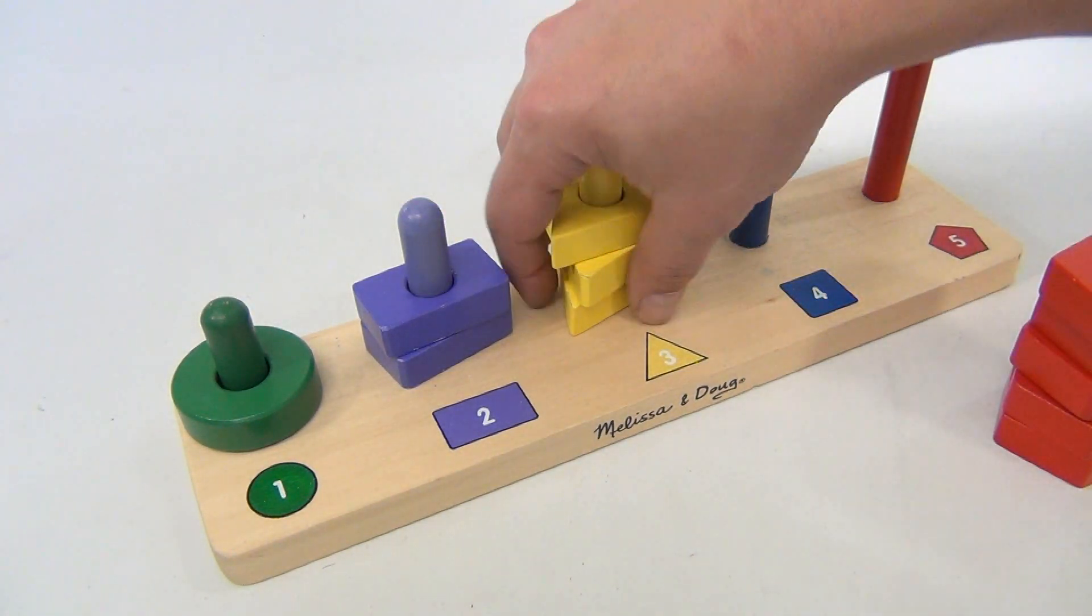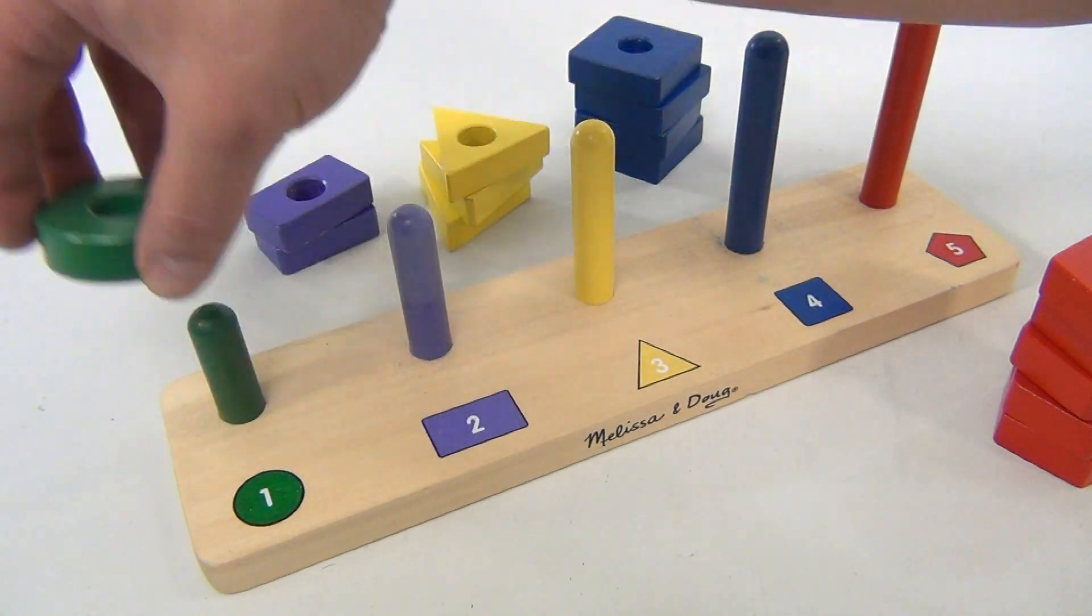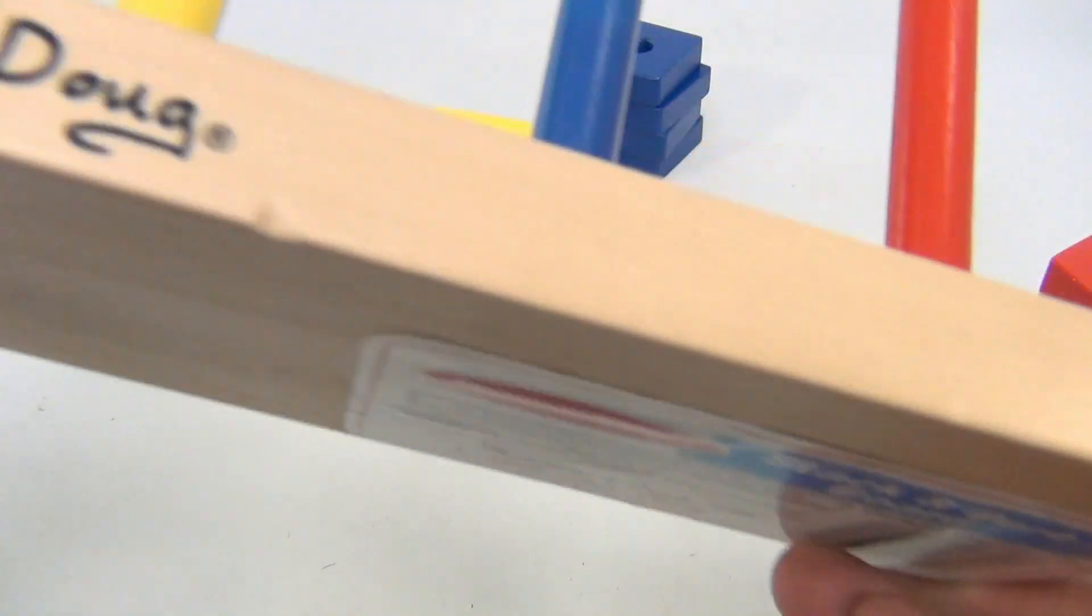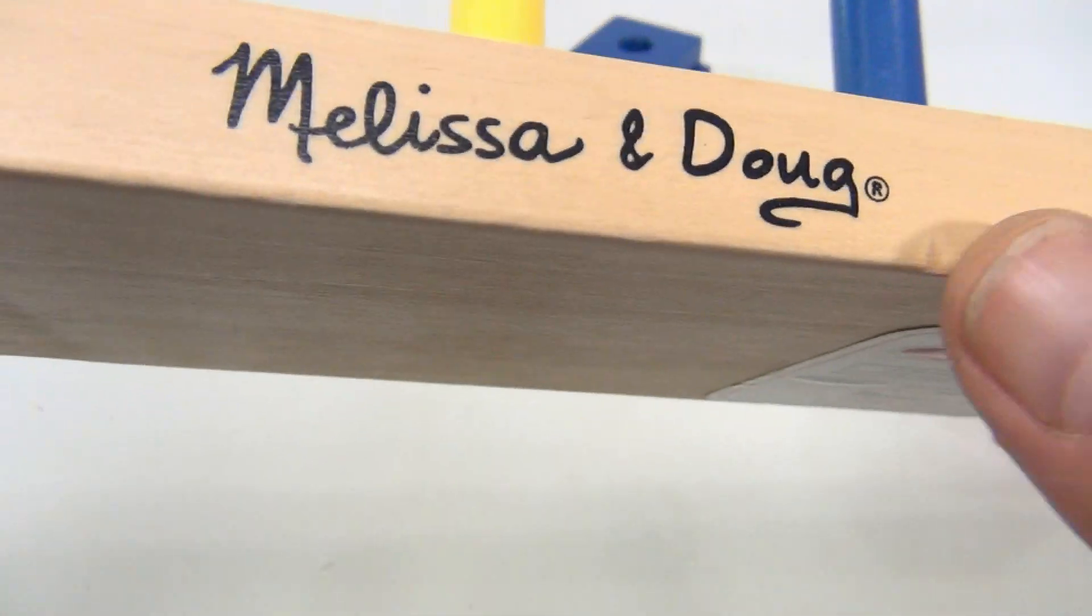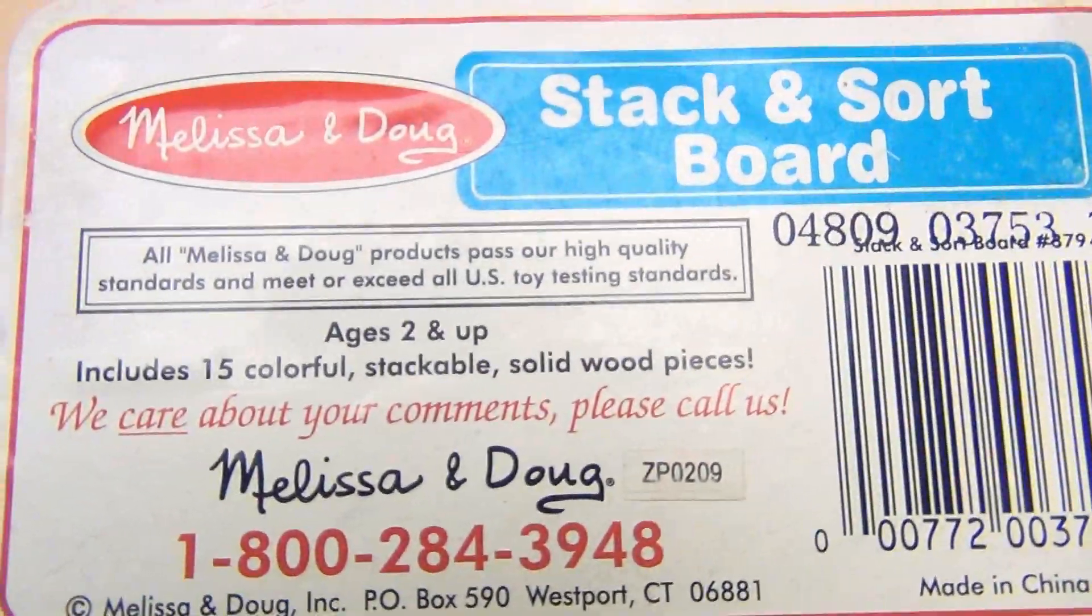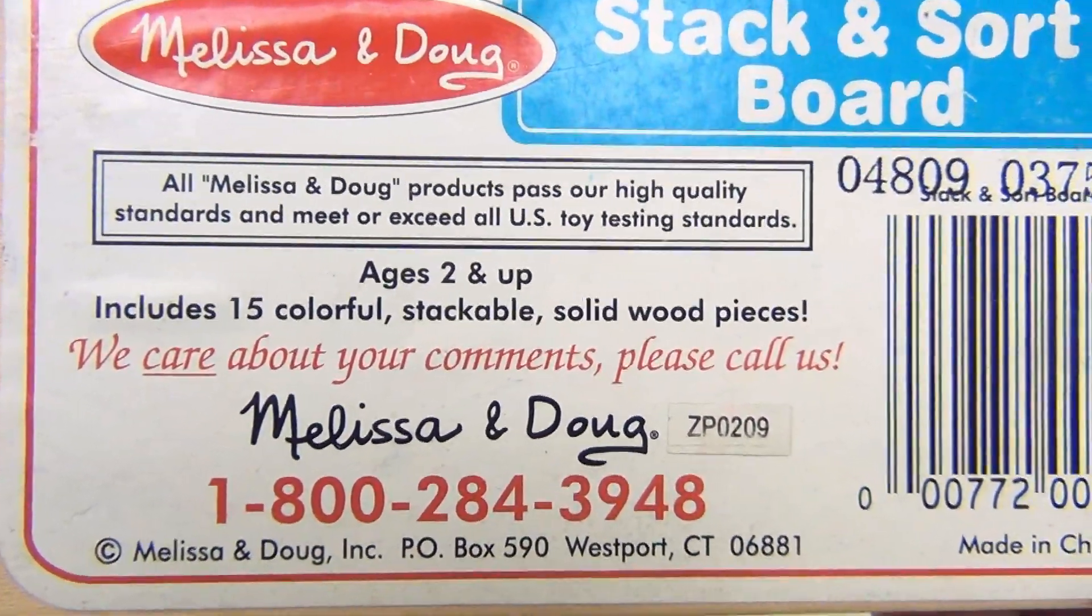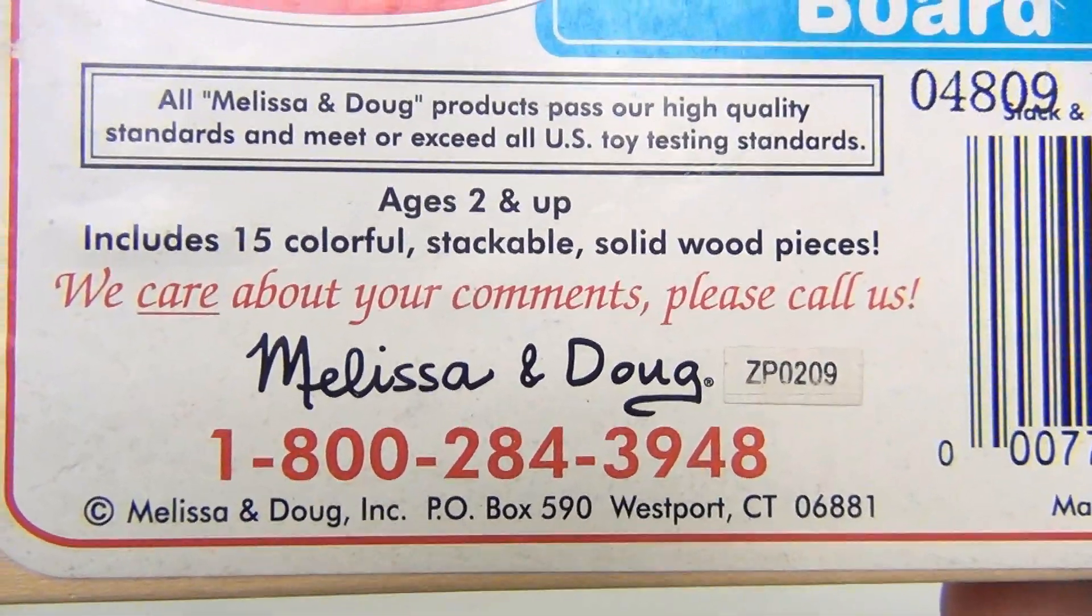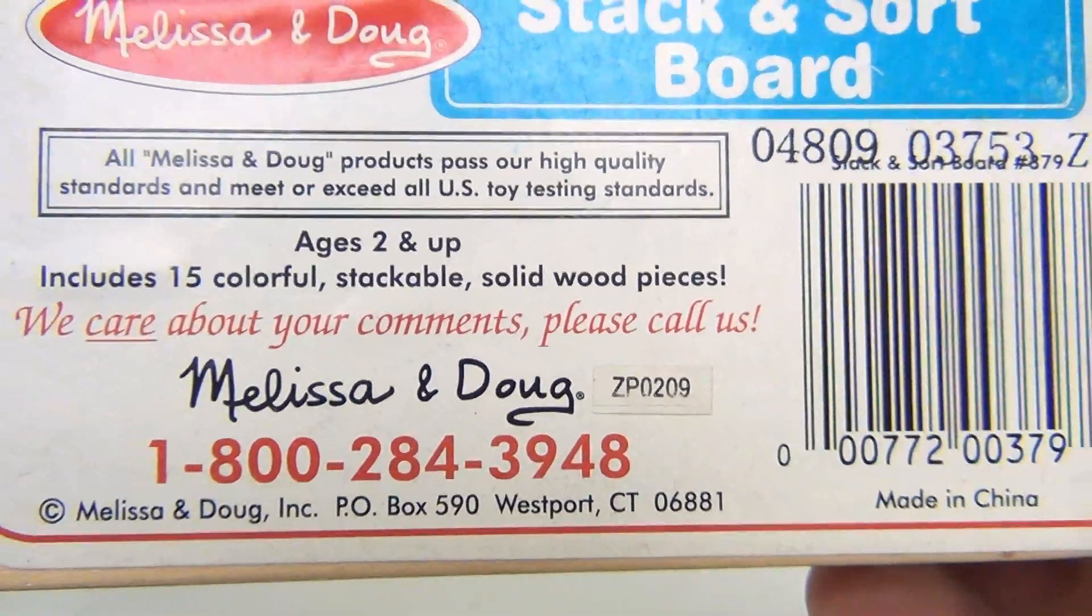So it is pretty fun. Wait, actually, let me - while I got these off - let me show you the bottom of this. You see that nice Melissa and Doug logo? There's a little nick in this one, not a nick but an indentation. Here we go: stack and sort board, ages two and up, includes 15 colorful stackable solid wood pieces.